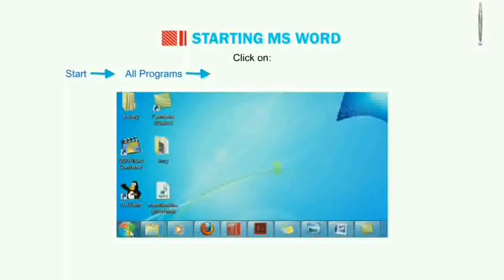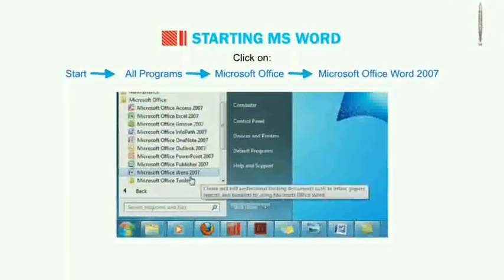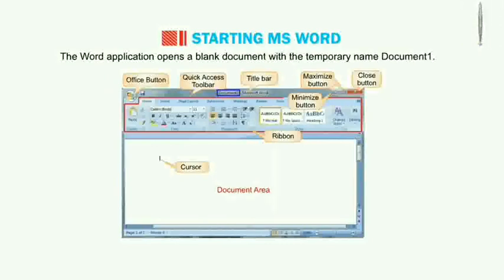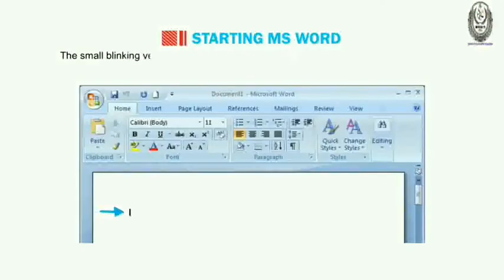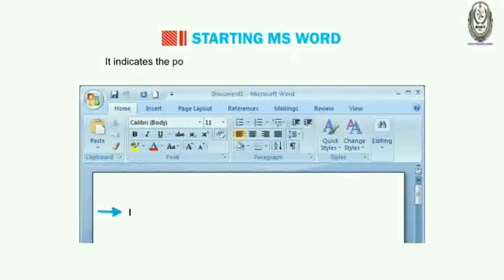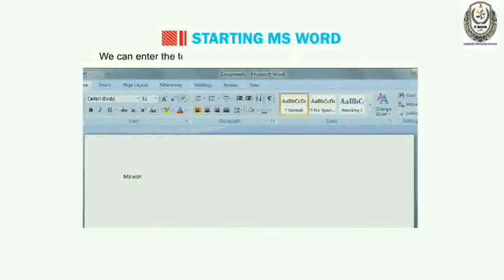Let us first learn how to start MS Word. Click on Start, All Programs, Microsoft Office, Microsoft Office Word 2007/2013/2016. The Word application opens a blank document with the temporary name 'Document1'. The small blinking vertical line on the screen is known as the insertion point or cursor. It indicates the position where the next typed character will appear.